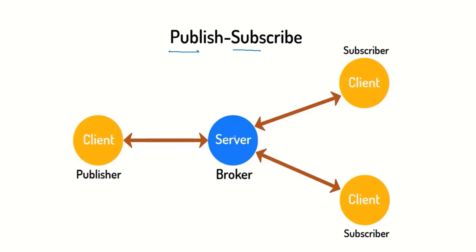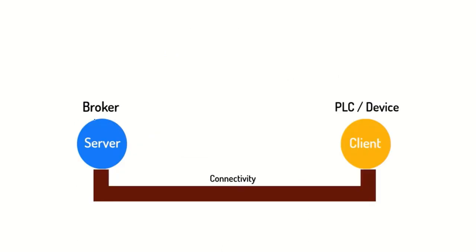The model used here is the publish-subscribe model, also called the pub-sub model. One particular client — Client 1 — publishes data, and other clients can subscribe to that topic. This is the simple concept of MQTT communication between one publisher and multiple subscribers through a broker.